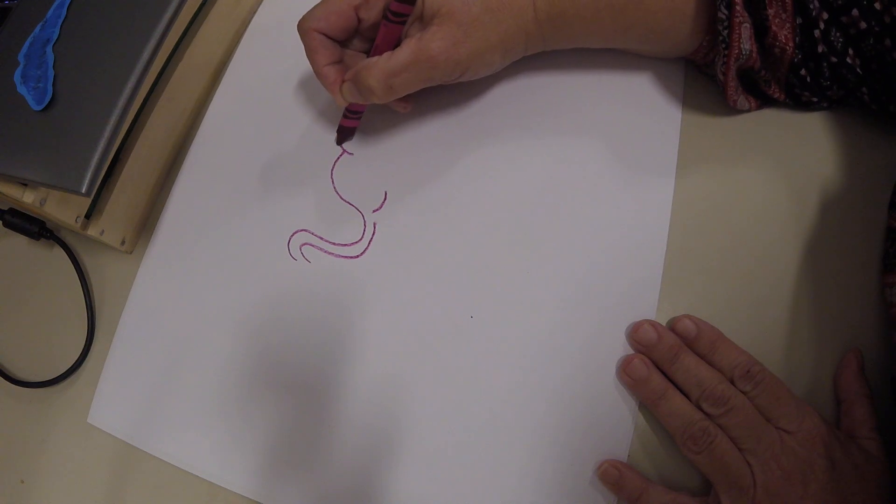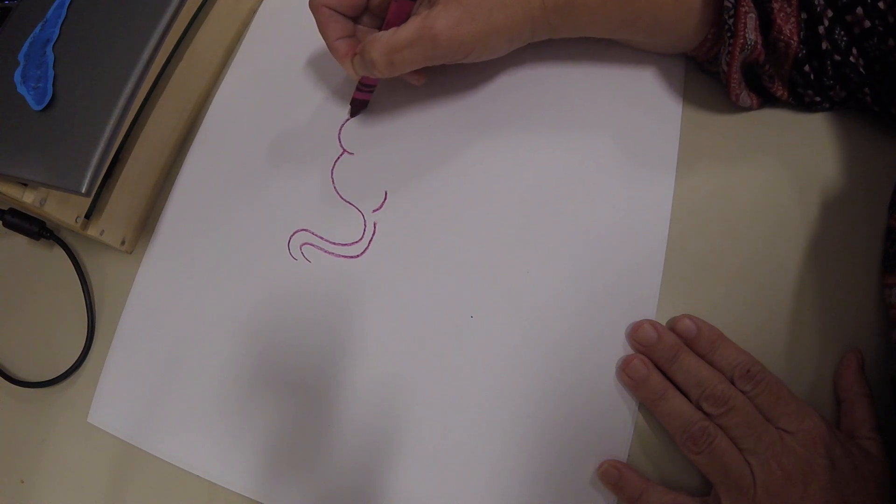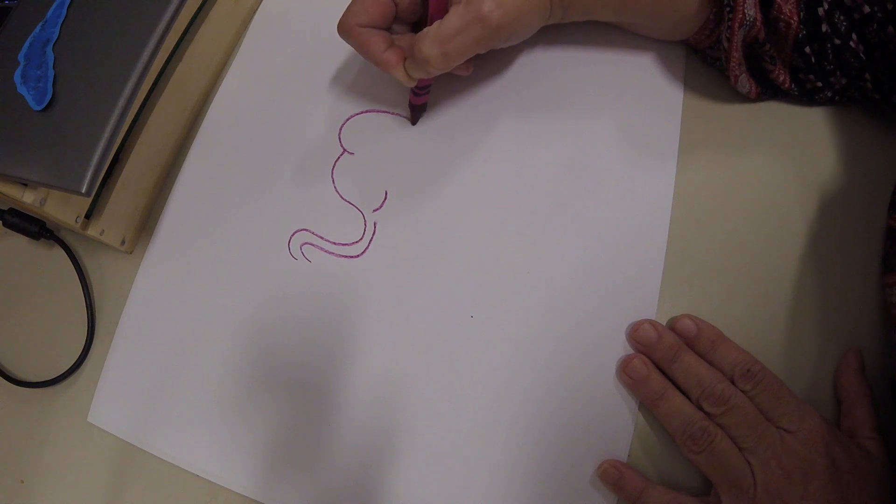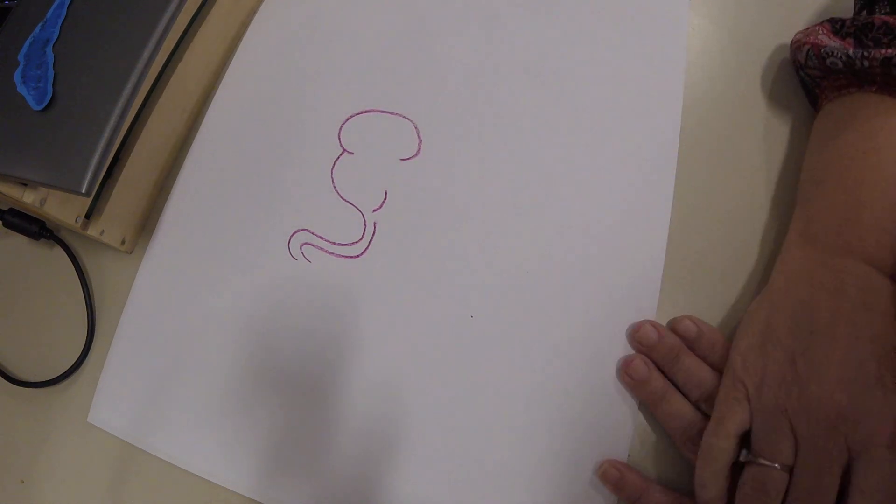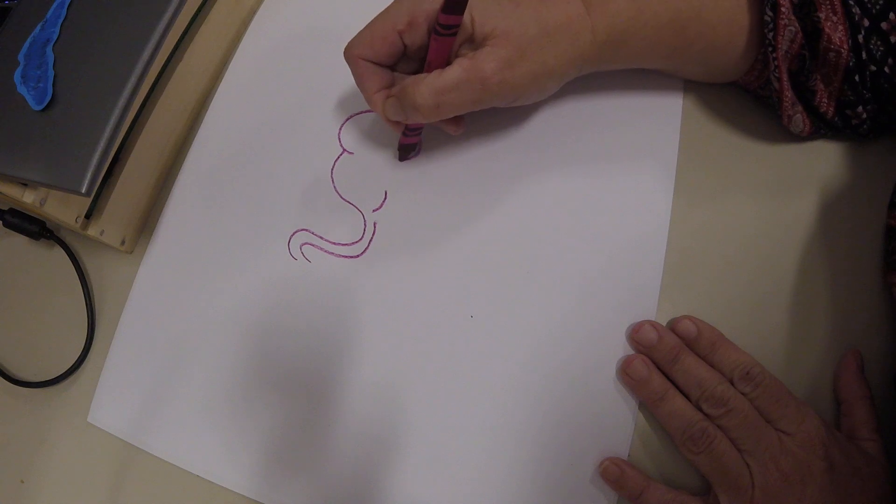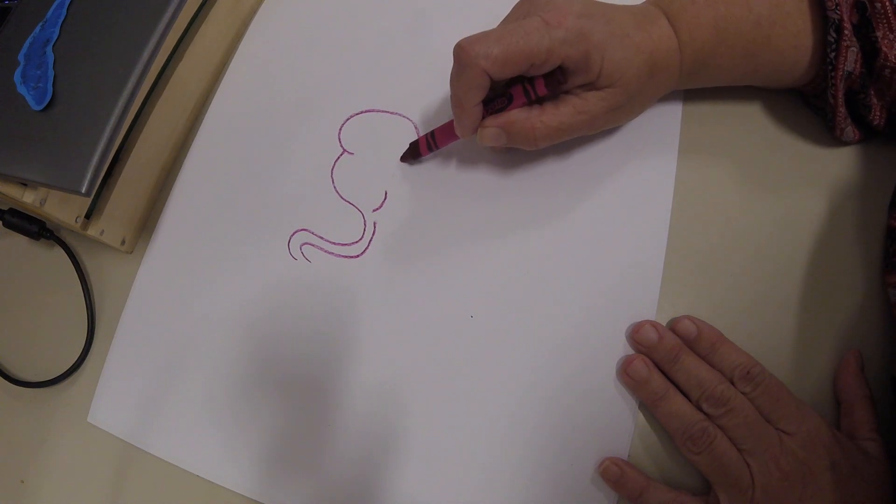From the end of this you're going to come in a little bit and then up and around. All of these are just shapes. Think of this as the backwards letter C, and I want to follow the end of that up to the center.